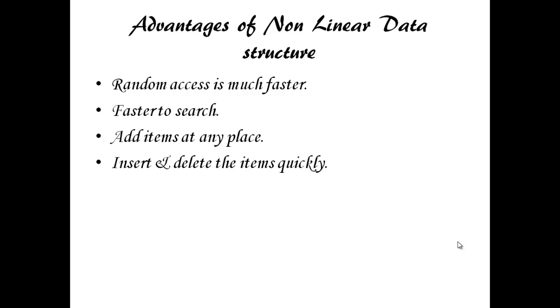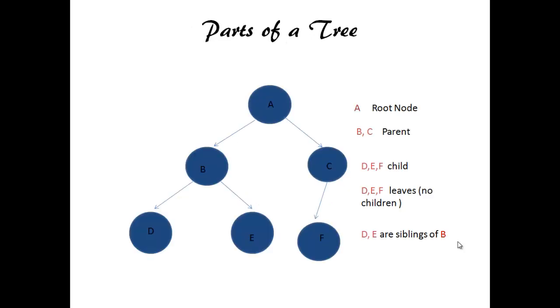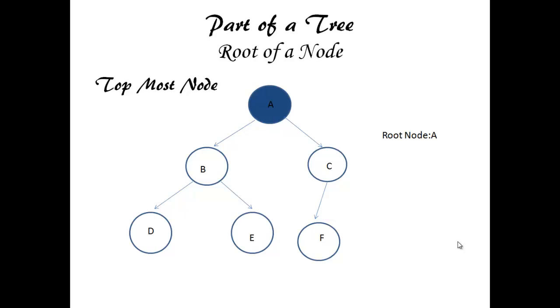Now, we will see in detail about trees. Look at this picture. This is a simple family example for trees. Now, we will see about parts of trees. Root node is the topmost node of a tree. It does not have any parent. There is only one root node per tree. Root node here is A.